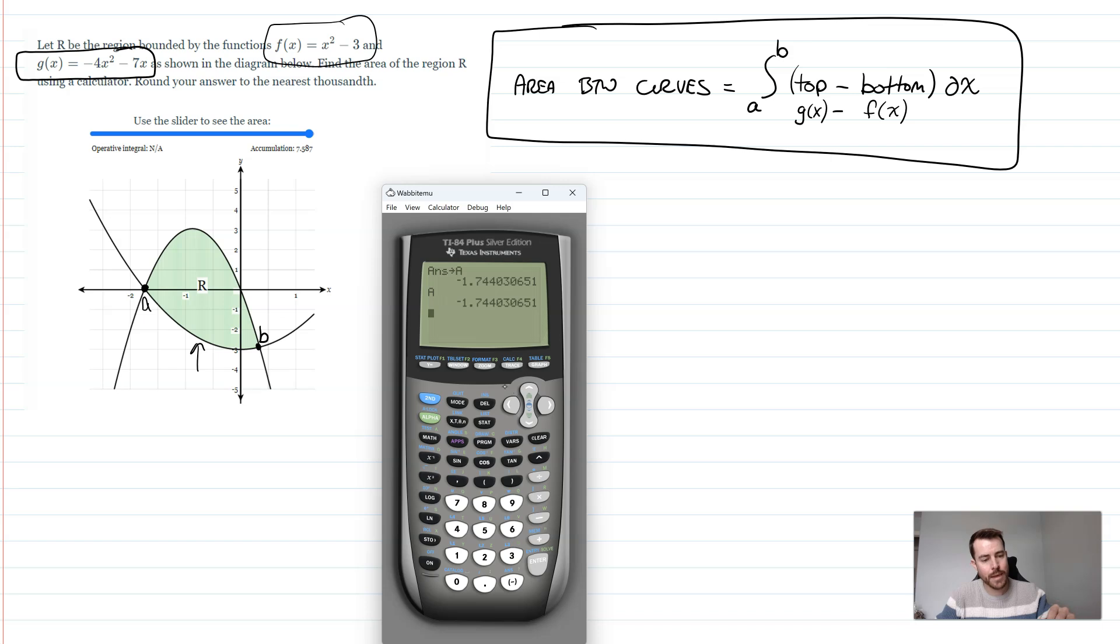Now we're going to do the same thing for B here. So I'm going to go back to my graph. I'm going to hit second, calc. We're going to go to intersect again. And again, first curve, second curve, it'll jump lines there. So you just hit enter, enter. The guess, now we're going to get that B value. So I'm going to hover towards the B intersection, click enter. And now that's at 0.344.